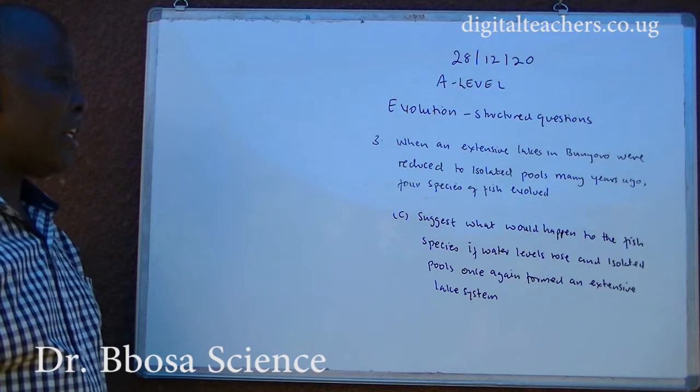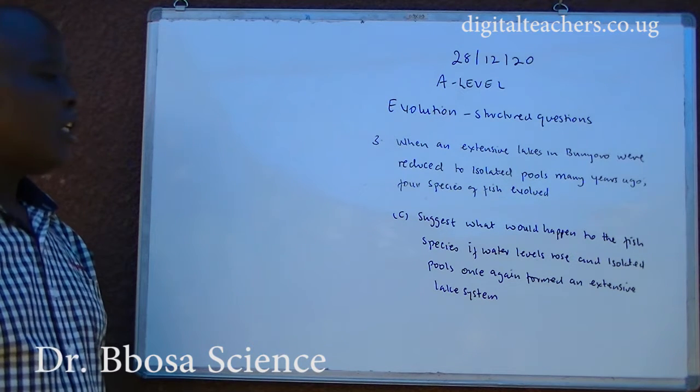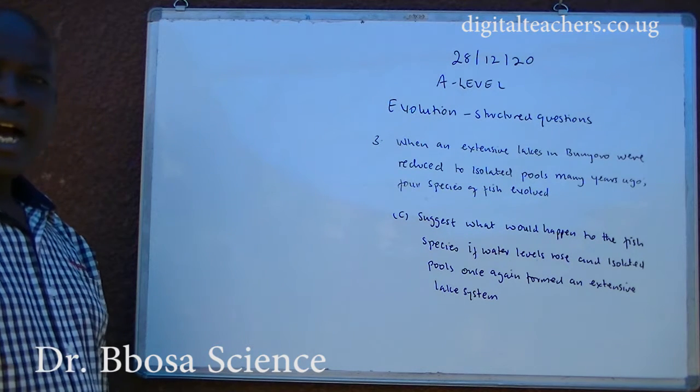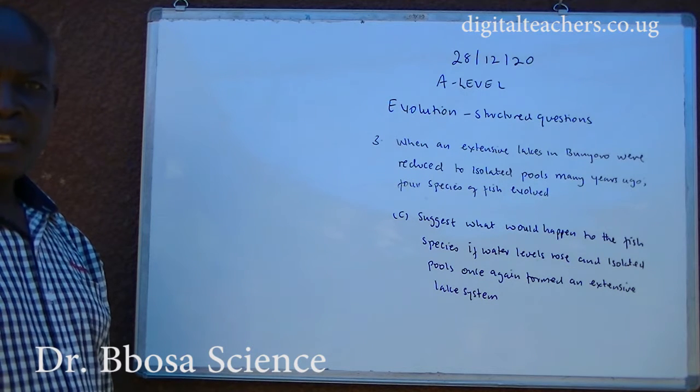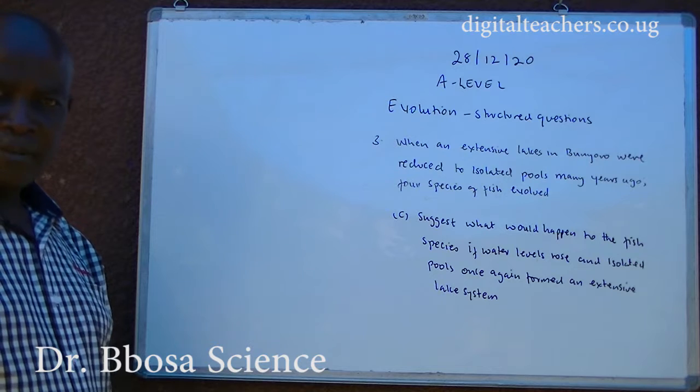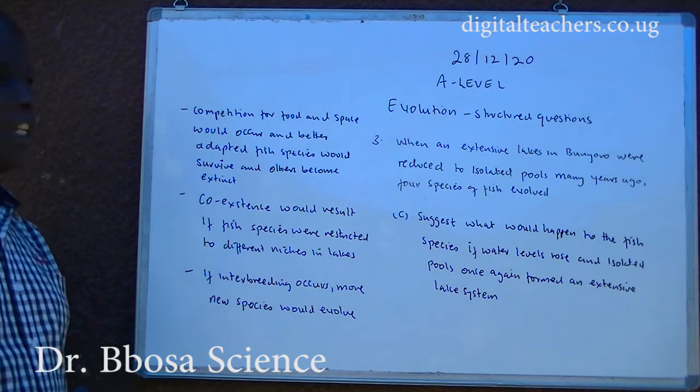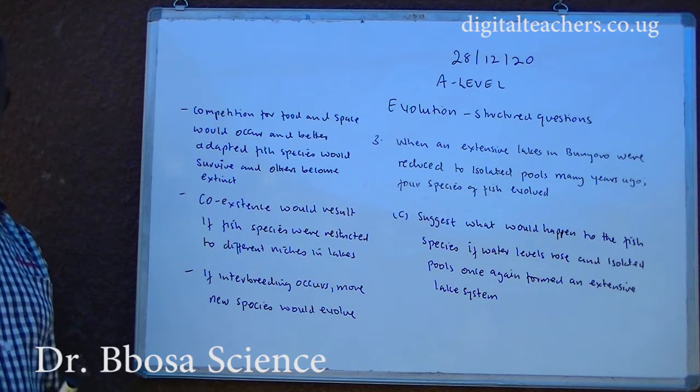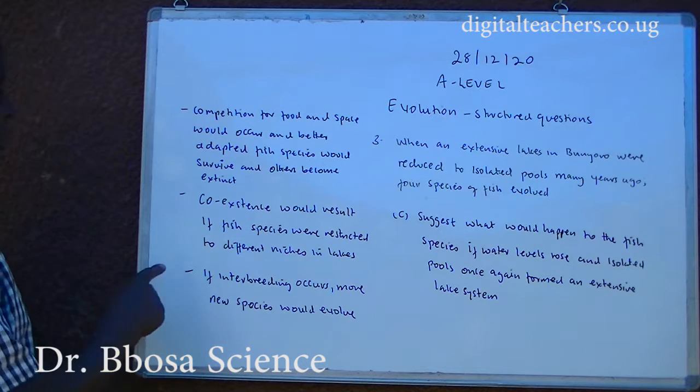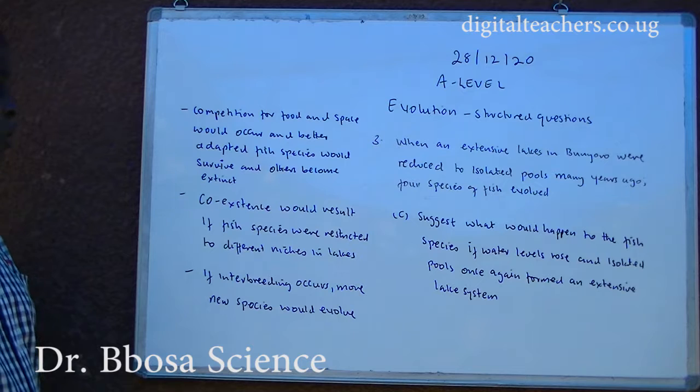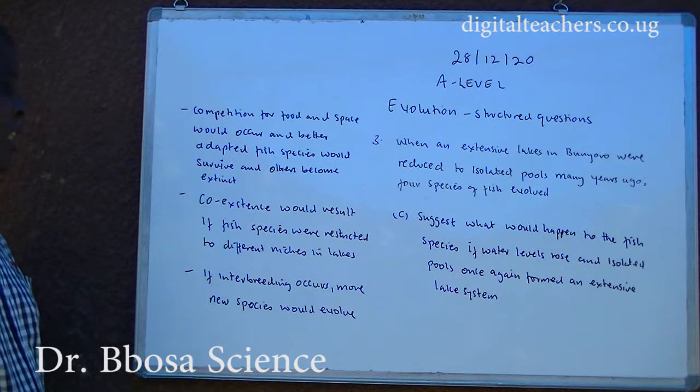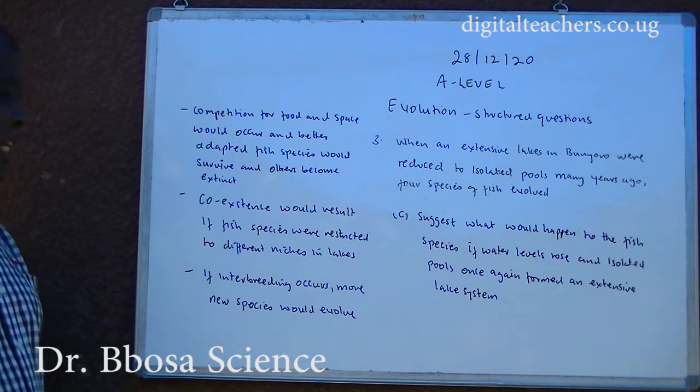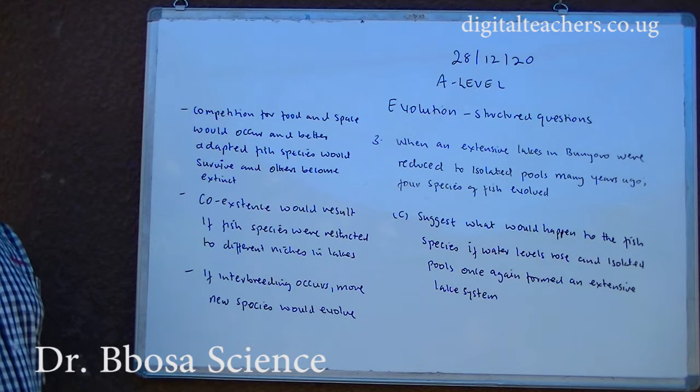C. Suggest what would happen to the fish species if water levels rose and isolated pools once again formed an extensive lake system. You can pause and answer. Competition for food and space would occur and better adapted fish species would survive and others become extinct. Or, co-existence would result if species were restricted to different niches in the lake. Or, if interbreeding occurs, more species would evolve.